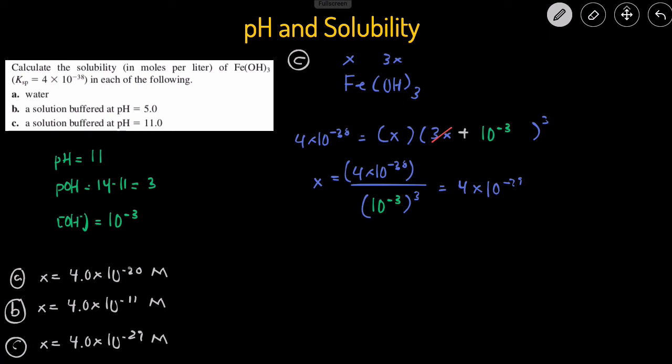And so that means the answer for C is just 4.0 times 10 to the negative 29. So you can see that the compound is actually the most soluble in acidic conditions, and it's the least soluble in basic conditions. Because this pH of 5 is acidic, and pH of 11 is basic. You can see that in acidic condition, it has the highest solubility, and in basic condition, it has the lowest solubility. And that's how you can solve for the solubility of a solid at a particular pH.